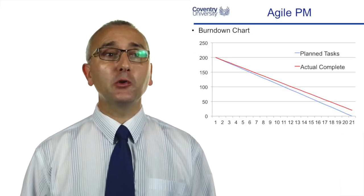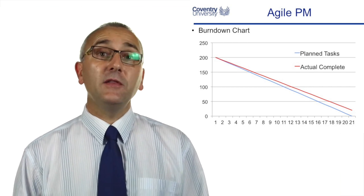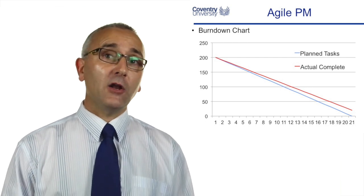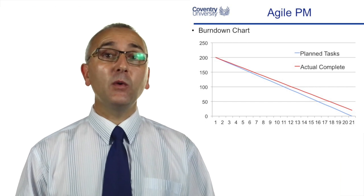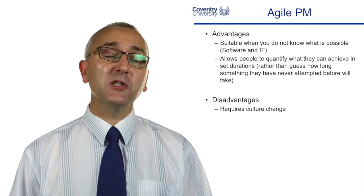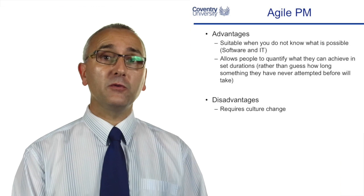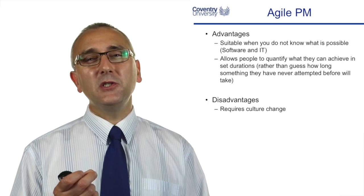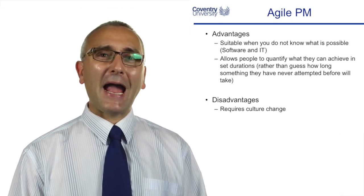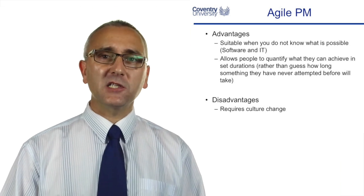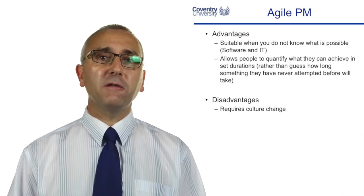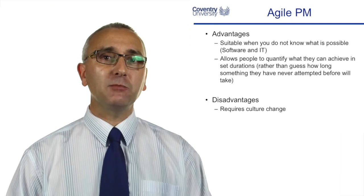A second agile tool is the burndown chart — a graph that shows how many tasks you wanted to complete and, over the life of the project, how many you've actually completed as you burn down towards that target. Agile project management has a lot of support in the textbooks, more so than critical chain project management. It's very suitable when you don't know durations or how you'll achieve something, which applies to software and IT-type projects. It also has tools that allow people to quantify what they can achieve in a fixed period of time.